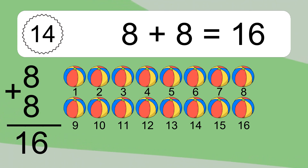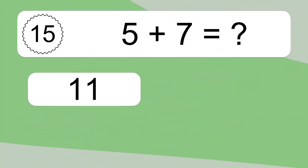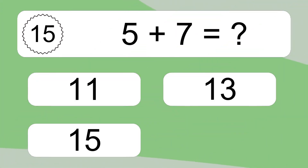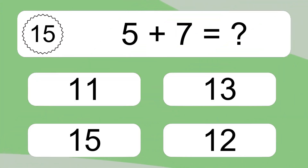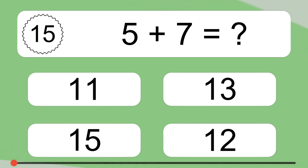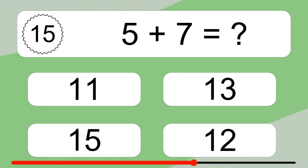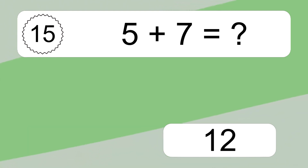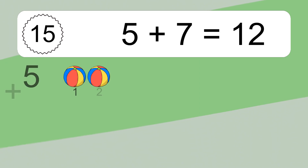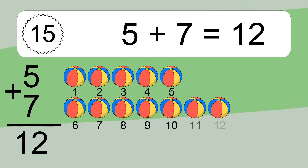5 plus 7 equals what? 5 plus 7 equals 12. Let's count it. 1, 2, 3, 4, 5, 6, 7, 8, 9, 10, 11, 12.